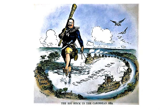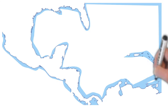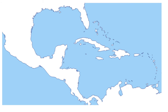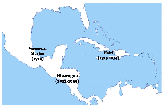Subsequent occupations occurred not just because of debts, but whenever the U.S. thought political unrest would threaten its interests. In the early 20th century, the United States sent marines to occupy Nicaragua between 1912 and 1933, Veracruz, Mexico in 1914, Haiti between 1915 and 1934, and the Dominican Republic from 1916 to 1924.